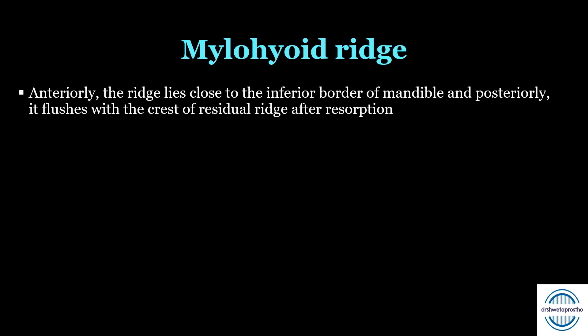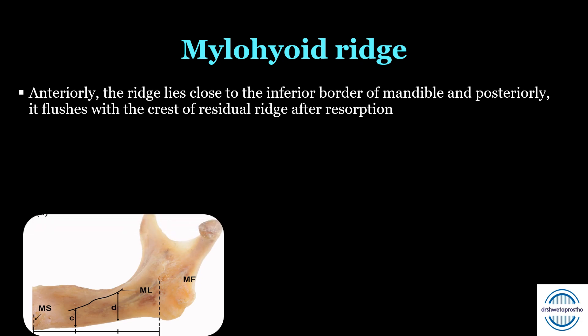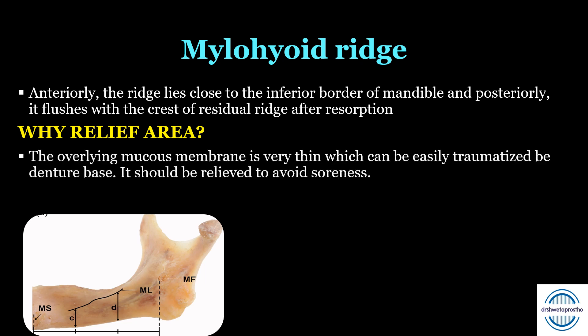The first relief area is the mylohyoid ridge. Anteriorly, the ridge lies close to the inferior border of the mandible, and posteriorly it flushes with the crest of the residual ridge after resorption. It is considered a relief area because the overlying mucous membrane is very thin in this region and can be easily traumatized by the denture base. It should be relieved to avoid any soreness.